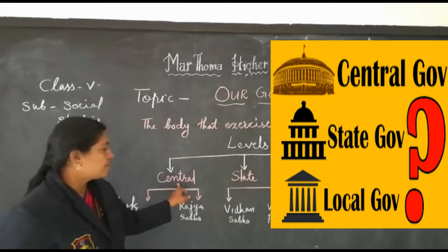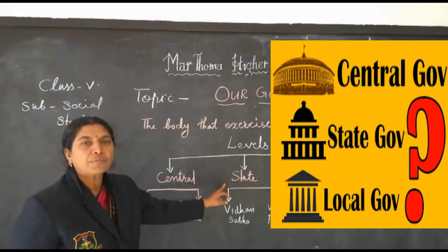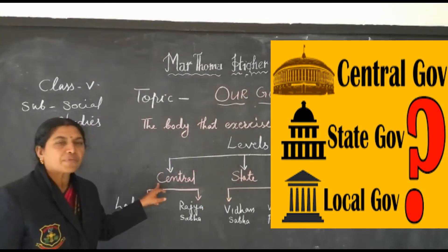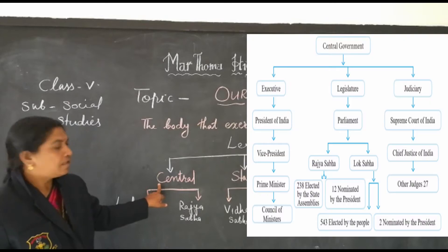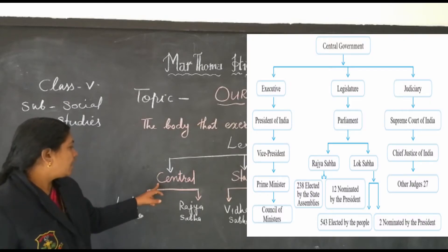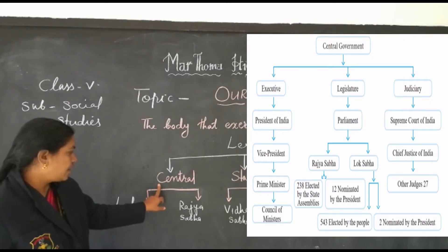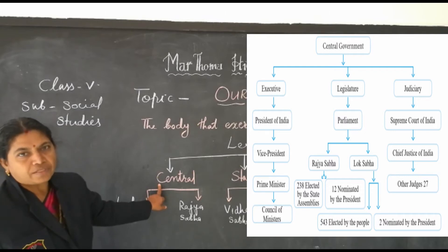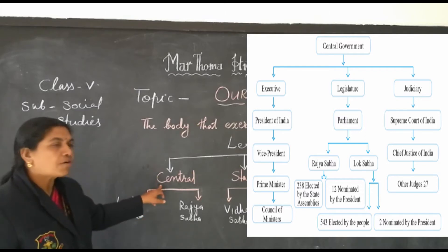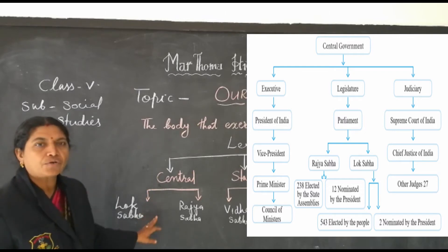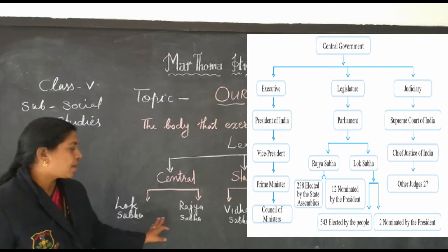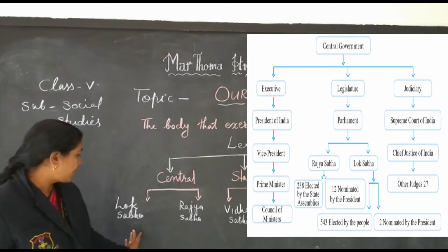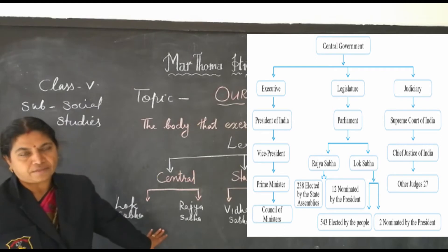That means central government, state government, and local government. The head of the central government is the President, and the head of the leaders of the MPs is called the Prime Minister. The central government is divided into two houses: they are called the Rajya Sabha and the Lok Sabha. The members of the Rajya Sabha and the Lok Sabha are called the MPs.